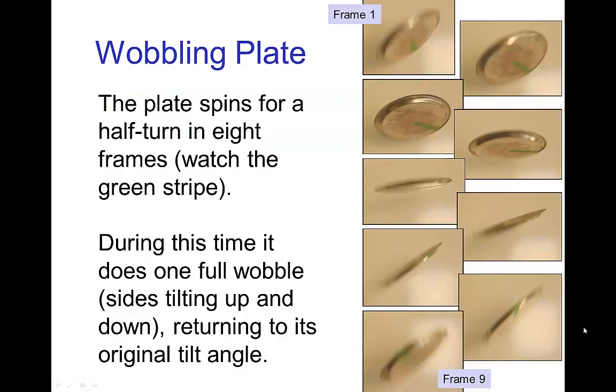So if you go frame by frame, you'll see that, for example here, the plate might spin a half turn in eight frames and during that time it does one complete wobble, that is the sides tilting up and down and then returning to the original tilt angle.